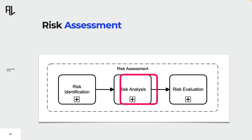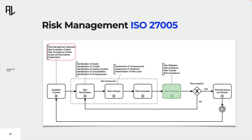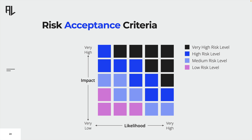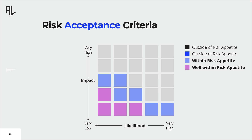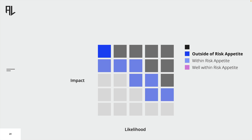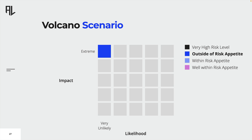The third and last step of risk assessment is risk evaluation. Organizations are required to determine risk acceptance criteria. In this example, an organization has determined that low and medium risks are acceptable — they are within its risk appetite. By consequence, all risks exceeding these criteria have to be treated until their level of risk has been reduced to a more acceptable level. The volcano risk was classified as high, which is why it cannot be accepted, as it is outside of the organization's risk appetite.